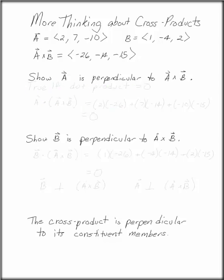More thinking about cross products. We have A is 2, 7, negative 10, and B is 1, negative 4, 2.